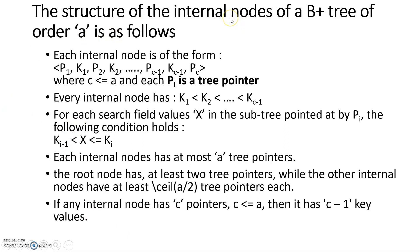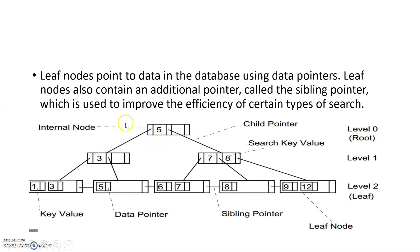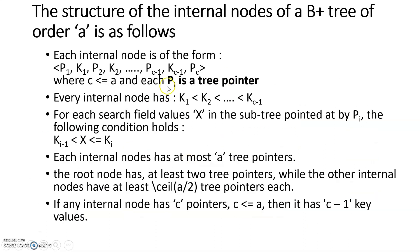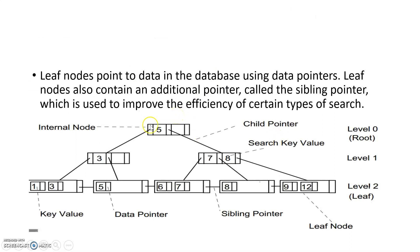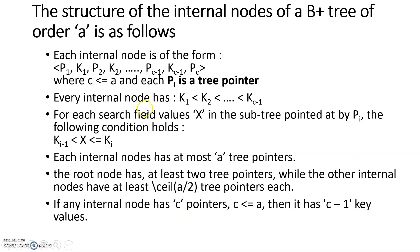The structure of internal nodes — including the root node — is exactly the same as that of the B tree and follows the same rules. The internal node is in the form: P1, K1, P2, K2, ..., where P1, P2, ... are subtree pointers and K1, K2, ... are keys, and the order of the tree is 'a'. So P1 and P2 are subtrees and K1, K2, K3 are the keys — same as B tree.